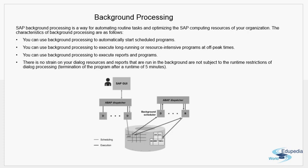Dialogue processing has a limitation in SAP: every dialogue work process has a timer set — typically five or ten minutes. This is to reduce the load on the system; if dialogue work processes ran forever and many users used them continuously, system performance would be impacted. So if you run a report that takes one hour, it cannot run in dialogue mode — after five or ten minutes the program gets terminated. That constraint does not apply to background processing.